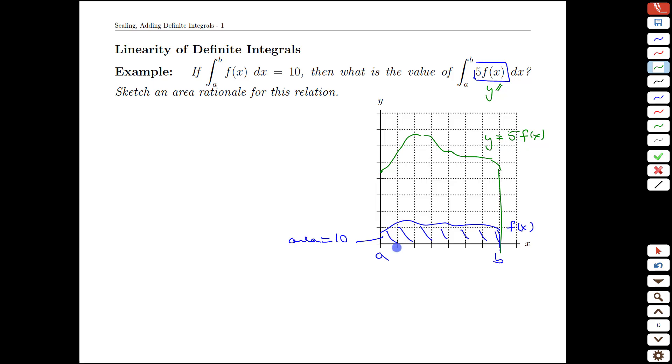Well, if that's the case and knowing what we know about areas, I've kept the interval the same. It's still the interval over a to b, but now I've stretched things vertically by a factor of 5.